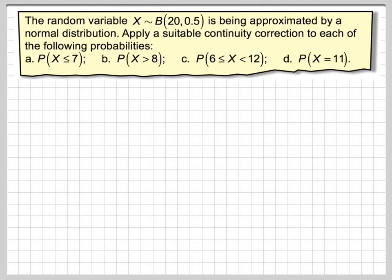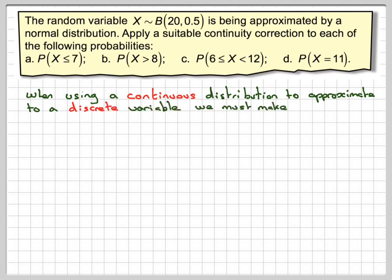The problem here is that we are using a continuous distribution, the normal, to approximate to a discrete variable, and therefore we must make this idea of a continuity correction.